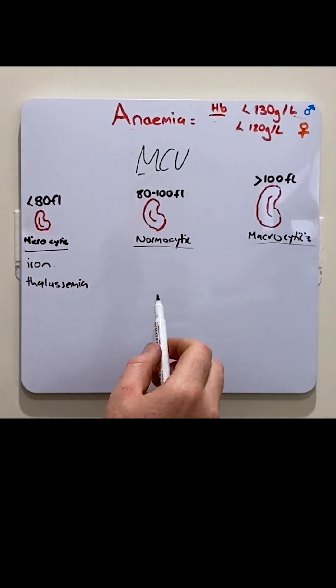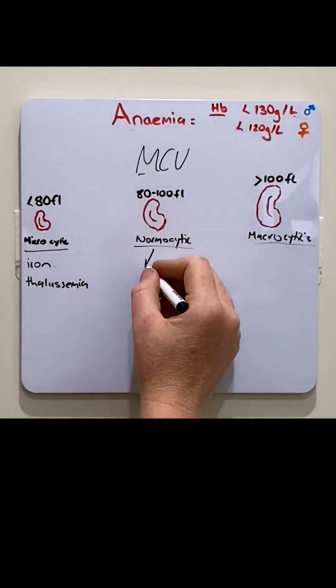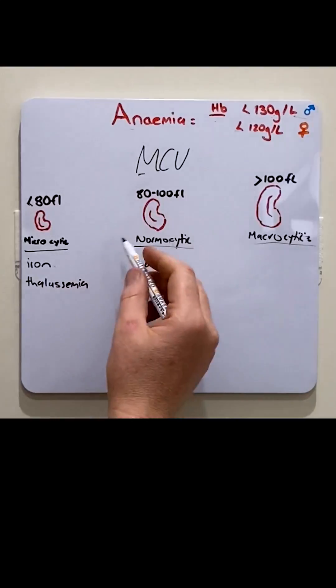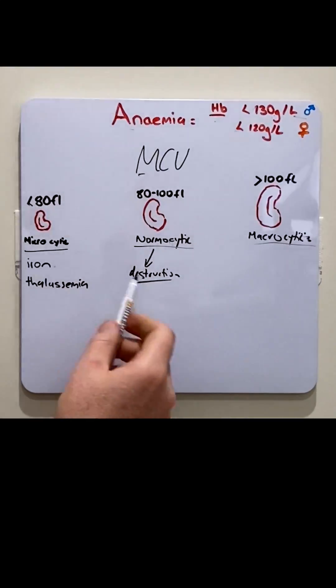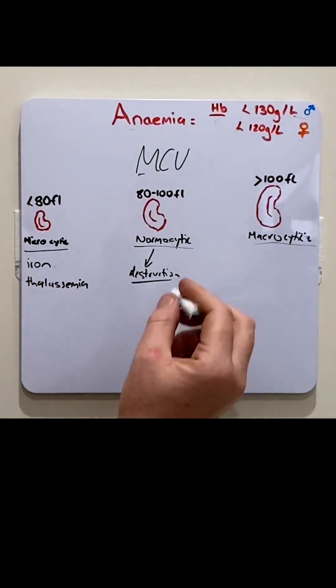With normocytic anemia, the two common categories are either destruction or production problems. For destruction, the two common forms are acute blood loss or hemolytic anemia, where the body destroys excessive amounts of red blood cells.